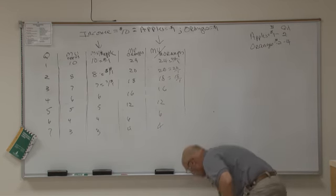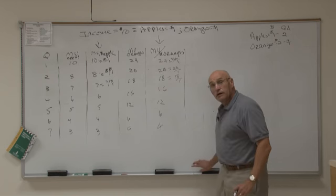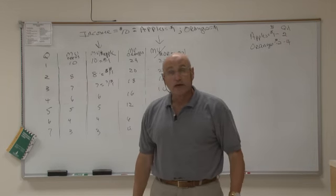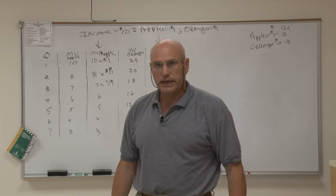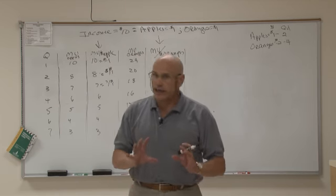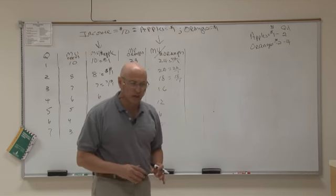Given the fact that the price of oranges have dropped now to $1, how will I allocate my money income? Again, the utility maximizing rule.